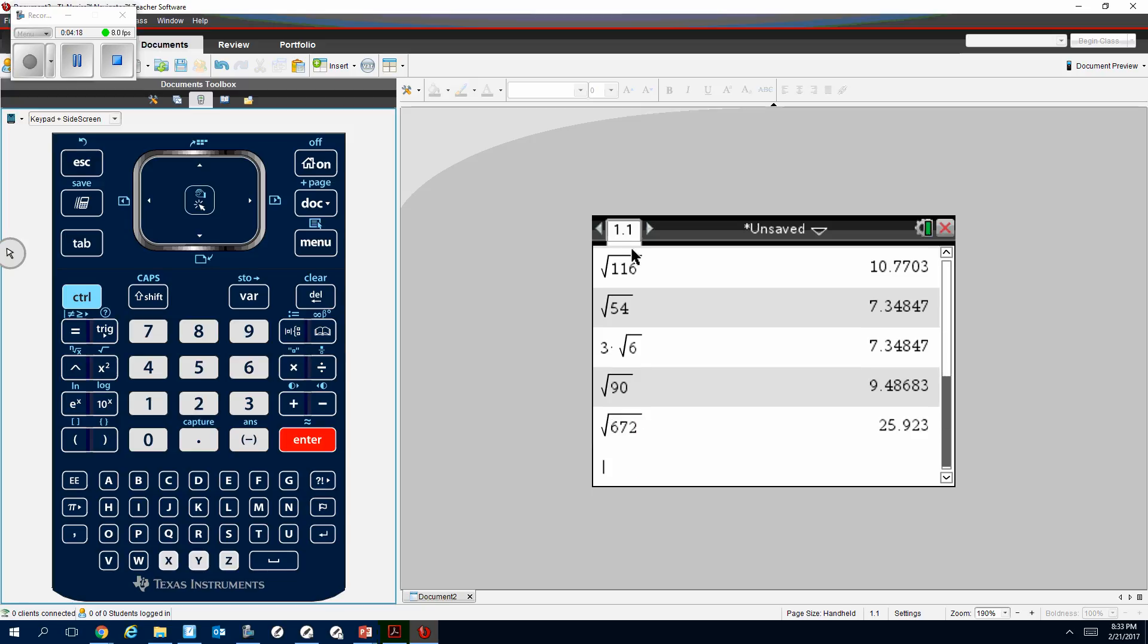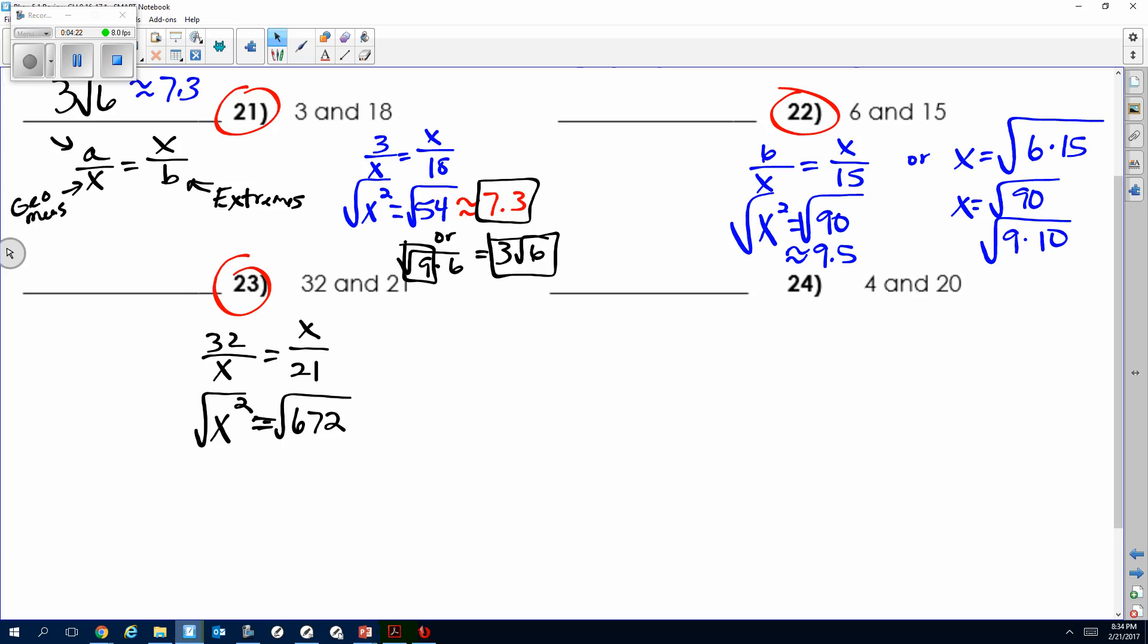We take the square root of that, and we get not a perfect square. Approximately 25.9. Now we need to simplify this. I need factors of 672 that—one at least is a perfect square.